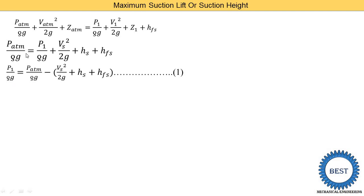We are finding the maximum suction lift, i.e., solving for Hs. Rearranging, p1 / ρg equals p_atmosphere / ρg minus (Vs² / 2g + Hs + hfs). This is equation number one.